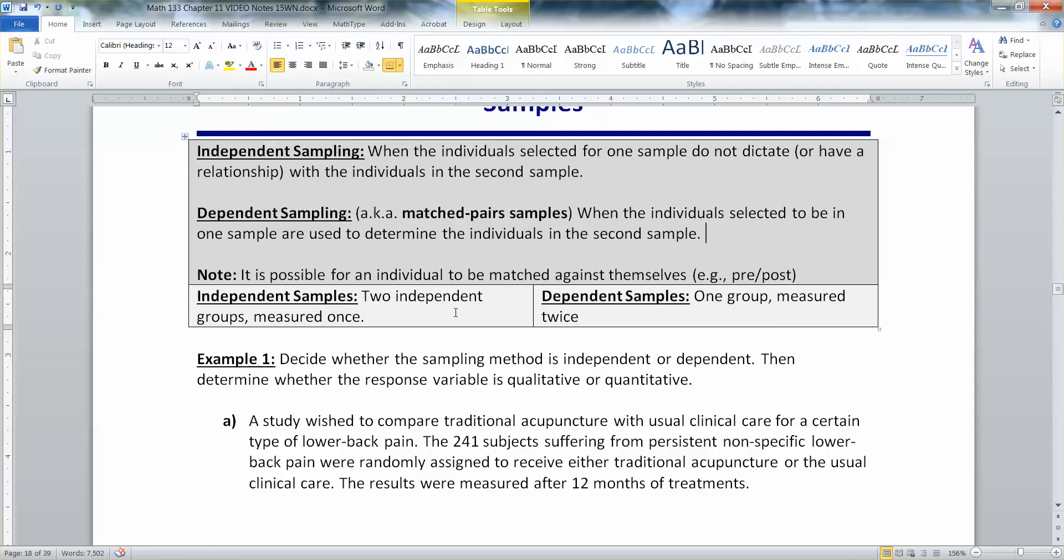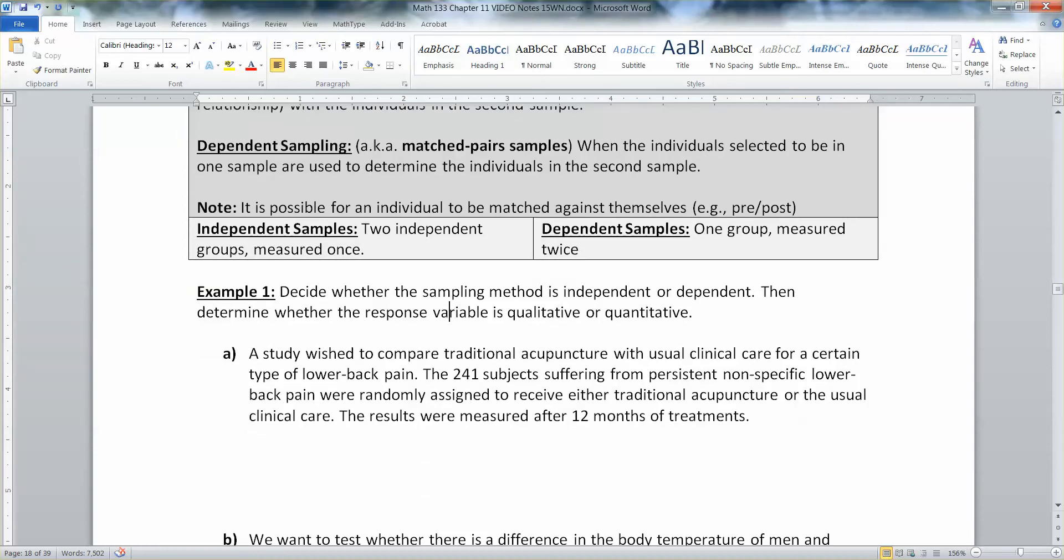So we're going to describe whether the following sampling method is independent or dependent, and then determine whether the response variable is quantitative or qualitative. A study wished to compare traditional acupuncture with usual clinical care for a certain type of lower back pain. The 241 subjects suffering from persistent nonspecific lower back pain were randomly assigned to receive either traditional acupuncture or the usual clinical care. The results were measured after 12 months of treatments.